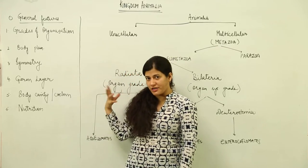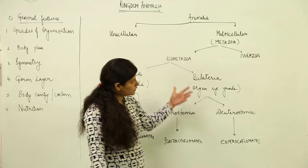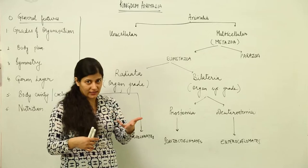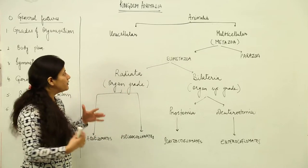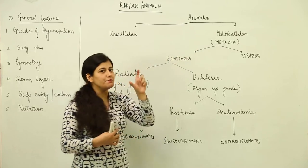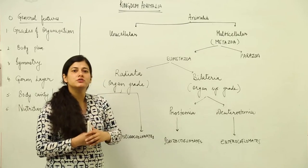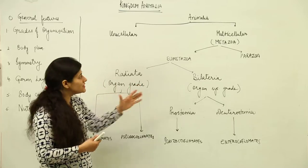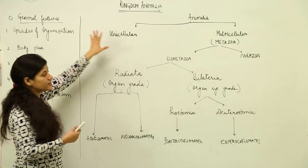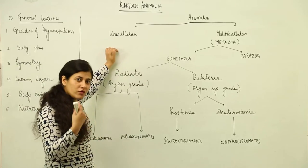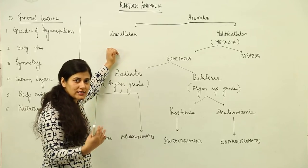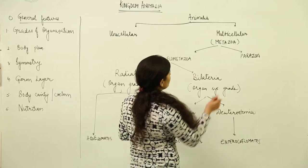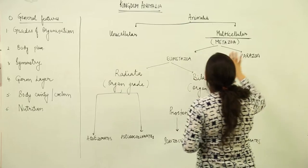Let us take grades of organization and body plan into consideration, and on that basis we will come to the next general characteristics and understand what the major broad classifications above phylums are. How do we understand an animal's body? The simplest example in Animalia would be amoeba, put into the protists, or sponges. The unicellular level is grades of organization level one, where the entire cell works as an organism — a single cell performing all functions. We have talked about this in the kingdom Protista. What we concentrate on here in Animalia is the multicellular organisms.